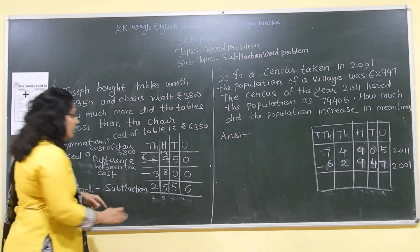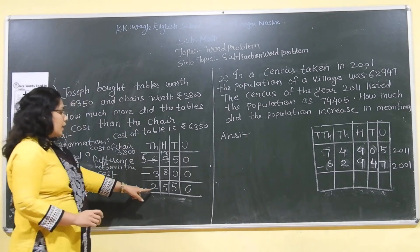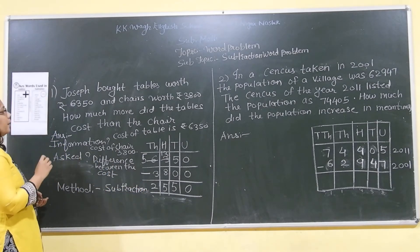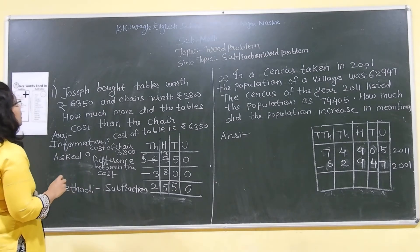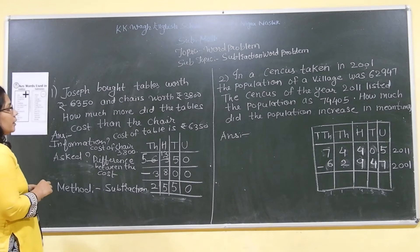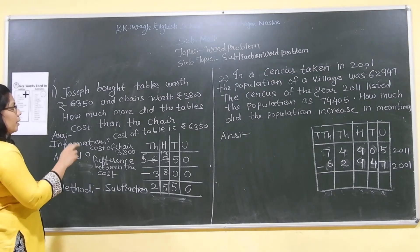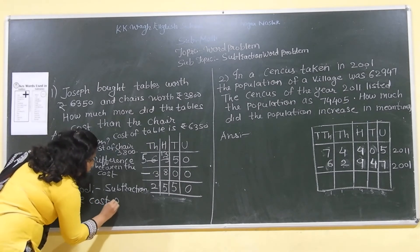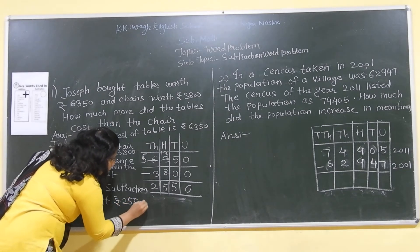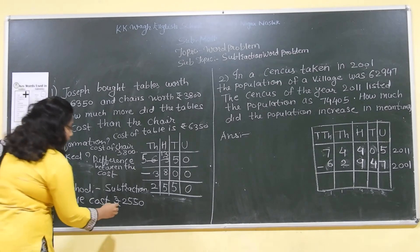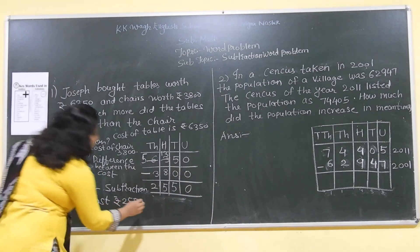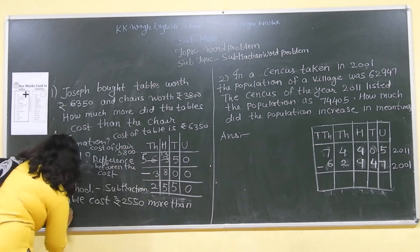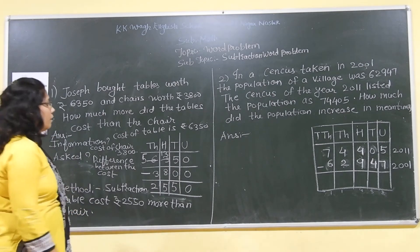So, what is the statement? We have got the answer, that 2550. So, the statement will come, how much more did the tables cost than the chair? So, the table cost rupees 2550, that is 2550 more than chair. In this way, we have solved the first step.